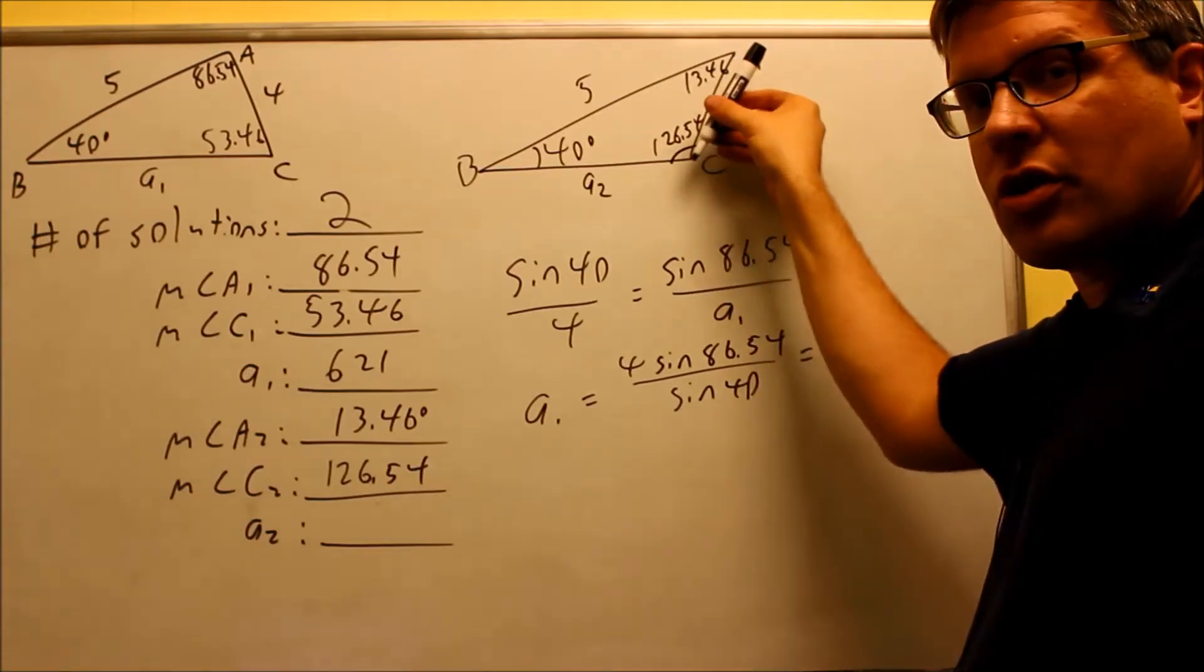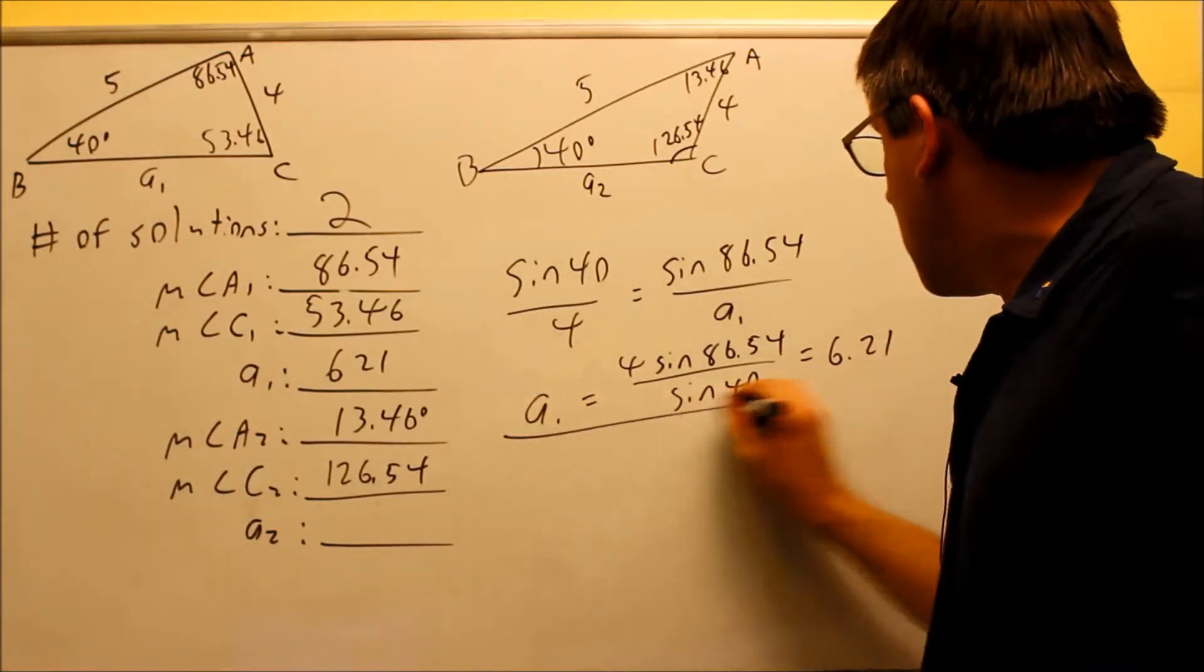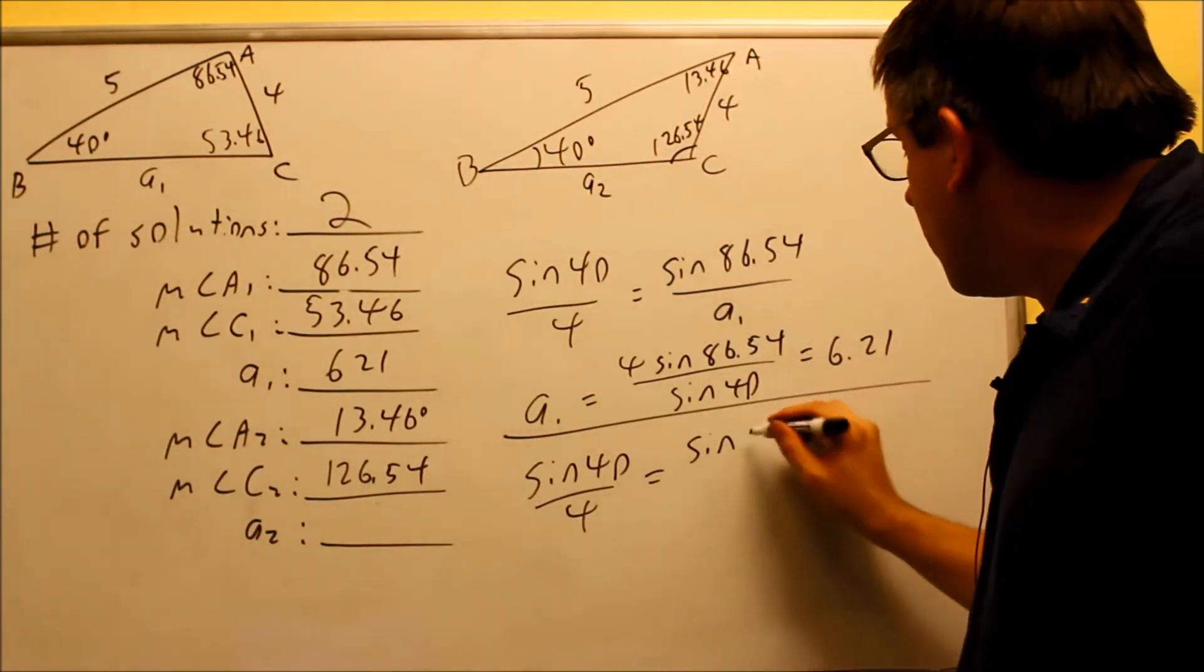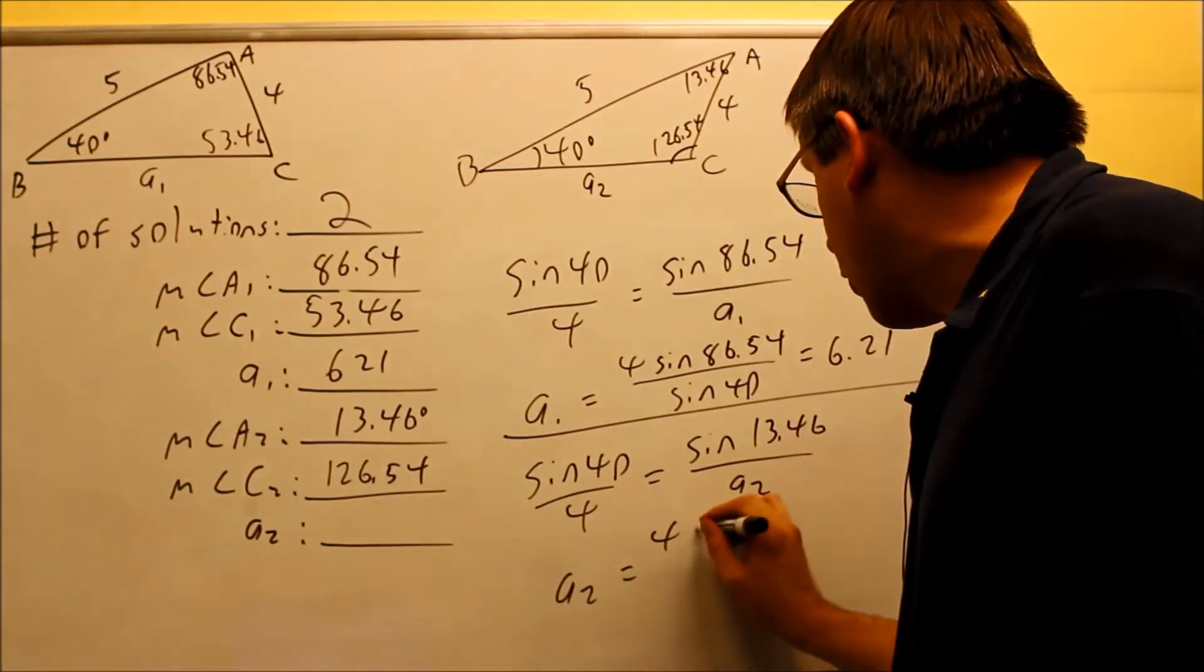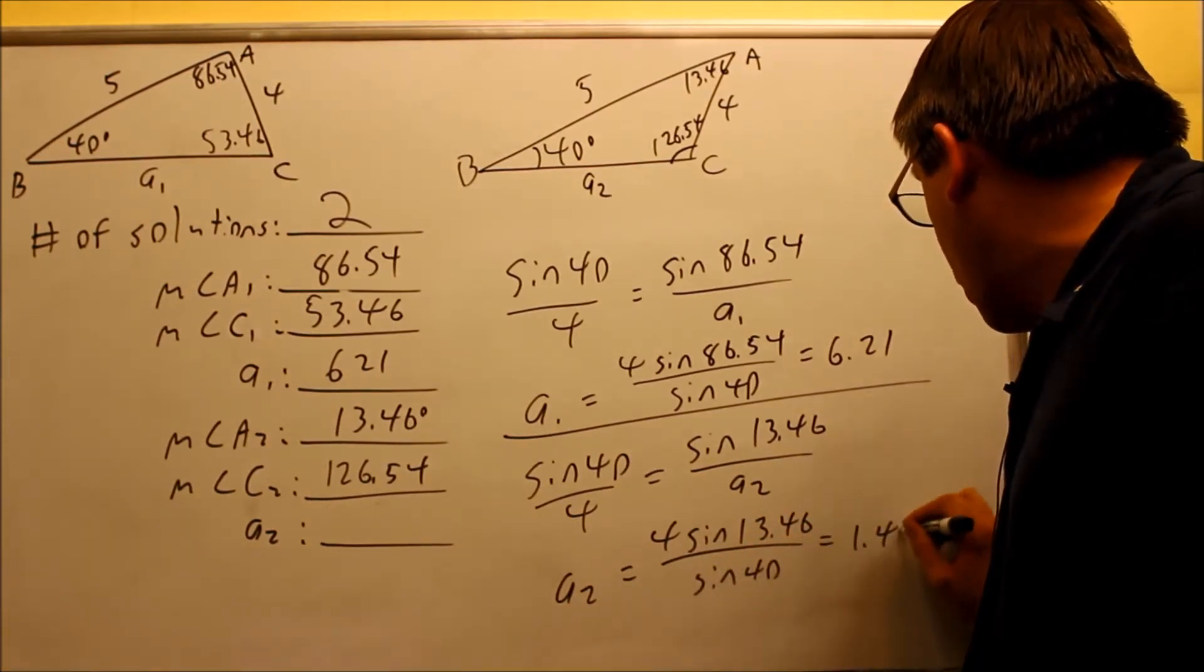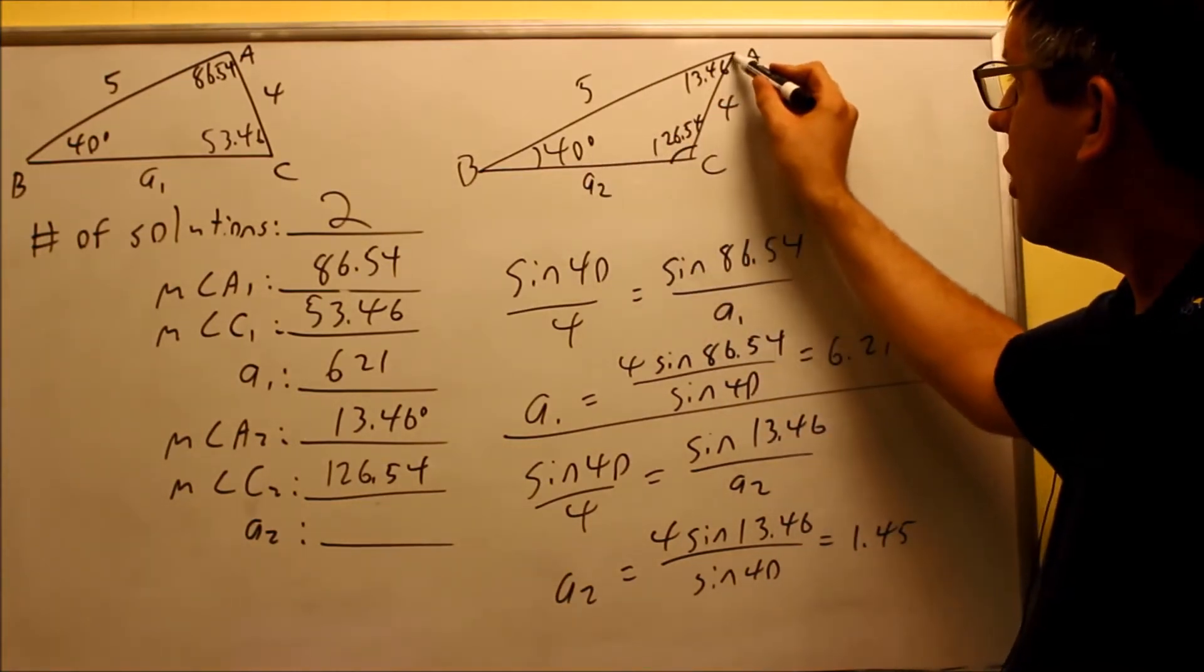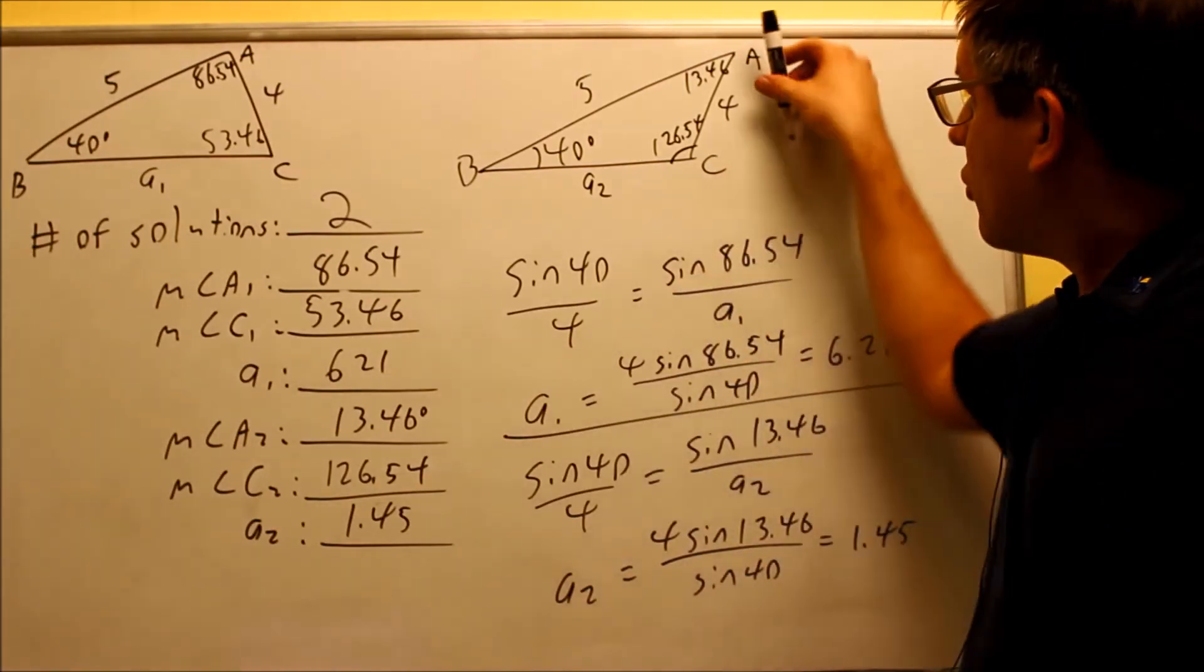Because we're taking the side and swinging it in, we should expect that our second answer for A2 should be smaller than 6.21. Let's check it out and verify that. We're going to do sine 40 over 4 equals, this time, sine of 13.46 over A2. Cross multiply to get 4 sine 13.46 over sine 40, and if we do that, we get 1.45 as the answer. So clearly you can see that's going to be swung in more because 13 is not a very big angle.